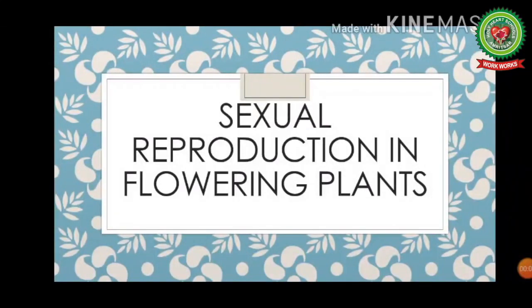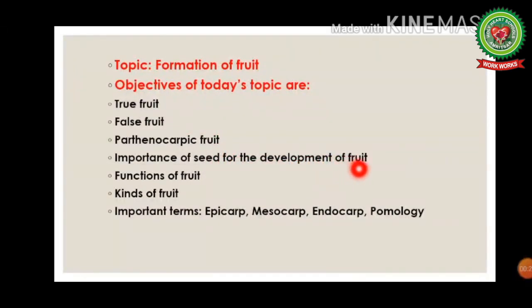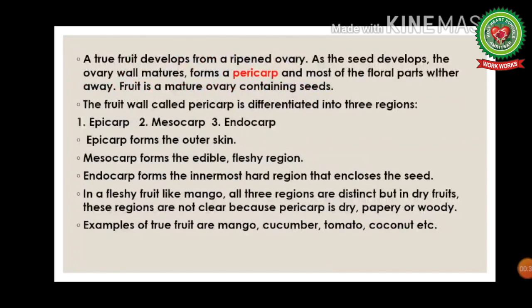Good morning students. Today we will be discussing the chapter 'Sexual Reproduction in Flowering Plants.' The topic for today is formation of fruit. The various objectives are: true fruit, false fruit, parthenocarpic fruit, importance of seed for development of fruit, functions of fruit, and kinds of fruit. We will also be learning terms such as epicarp, mesocarp, and endocarp.